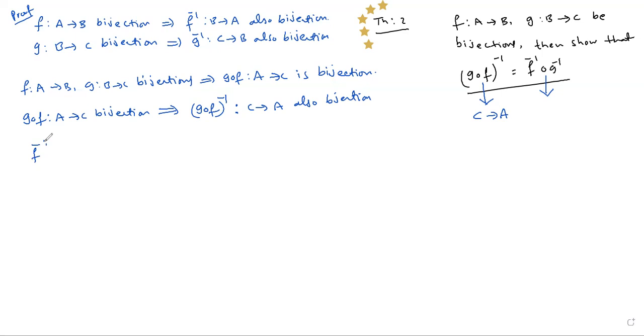You can apply this concept here. F inverse: B→A and G inverse: C→B are bijections. That implies F inverse circle G inverse: C→A is also bijection.